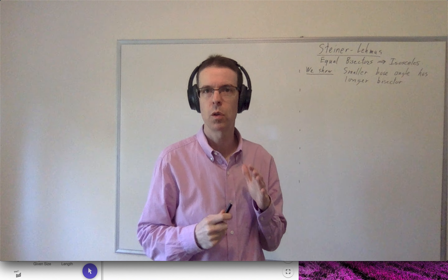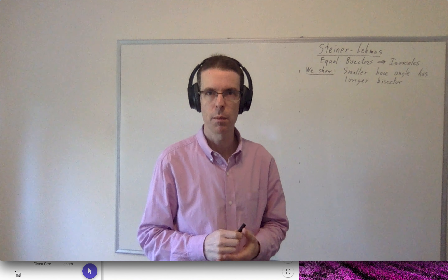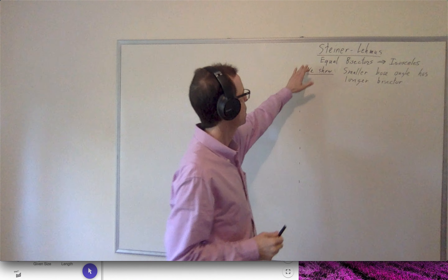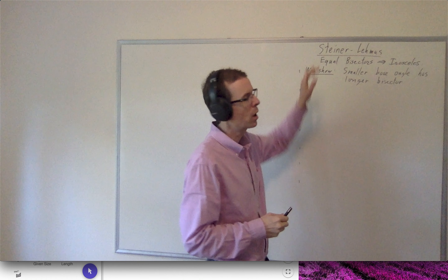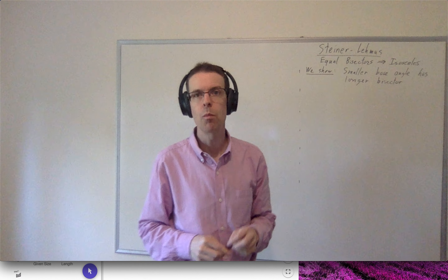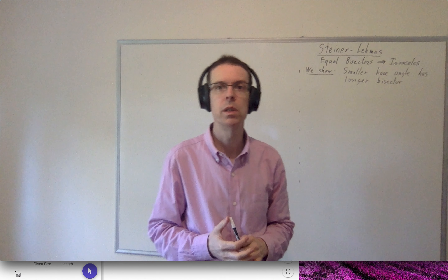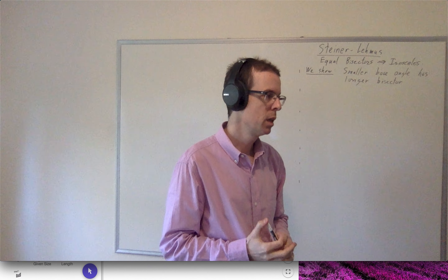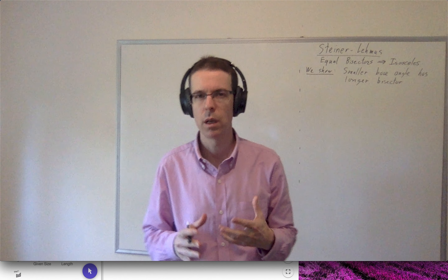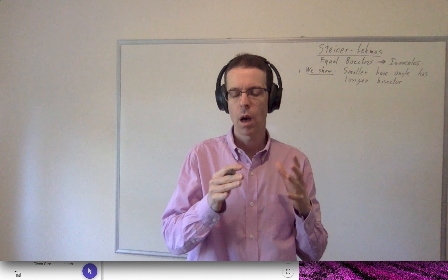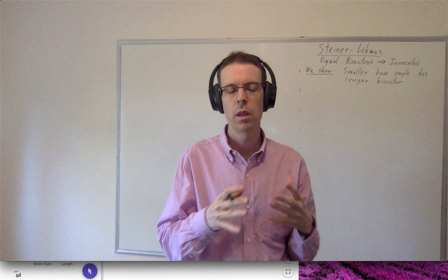We're talking about the very challenging and difficult Steiner-Lehmus theorem. The Steiner-Lehmus theorem states that if a triangle has equal bisectors, then that triangle is isosceles. This is one of a family of theorems that are about isosceles triangles.